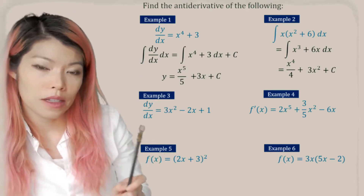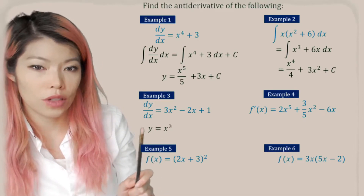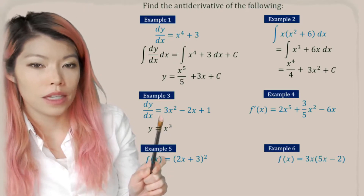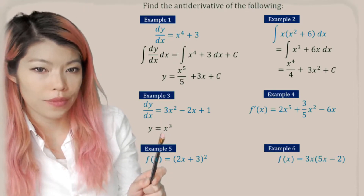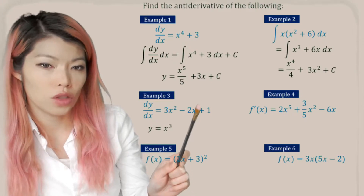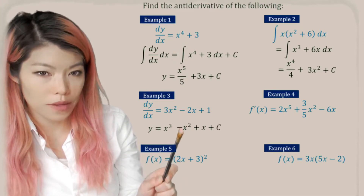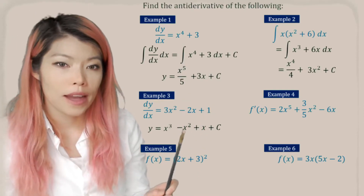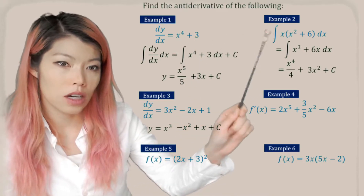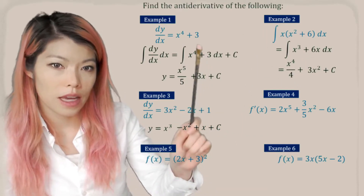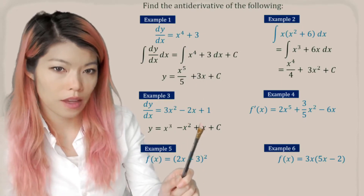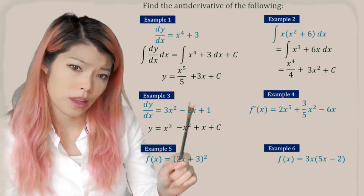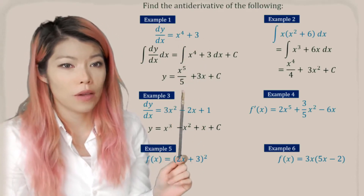dy/dx — same kind of format. Going straight to y: x to the 1 plus 1 is 3, dividing by the new power, 3 over 3 is just 1. Now x to the 1 plus 1 is 2, divided by 2 we get minus 1. And then x to the 0 becomes just x. The pattern is: when you see a constant, you just add x next to it. When you see any other x, make sure you add 1 to the power and divide by that value.